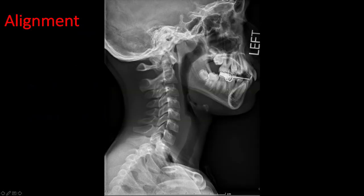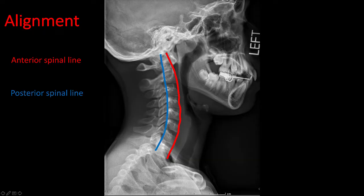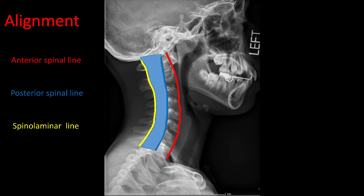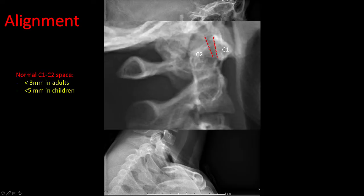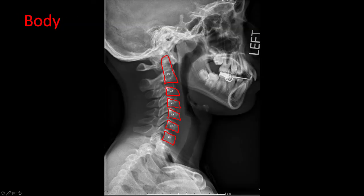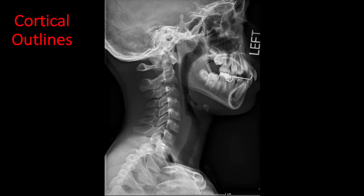Alignment of the spine in the lateral view is assessed by checking specific lines. The anterior spinal line is assessed by joining the anterior aspect of the vertebral bodies. The posterior spinal line is assessed by joining the posterior aspect of the vertebral bodies. The spinal laminar line is assessed by joining the anterior edges of the spinous processes. These lines should have a smooth curvature. The spinal cord lies between the posterior spinal line and the spinal laminar line. Also assess the interval between C1 and C2, called the C1-C2 space — it should be less than 3 mm in adults and less than 5 mm in children. Check the height of vertebral bodies and make sure each vertebral body corresponds to its spinous process.